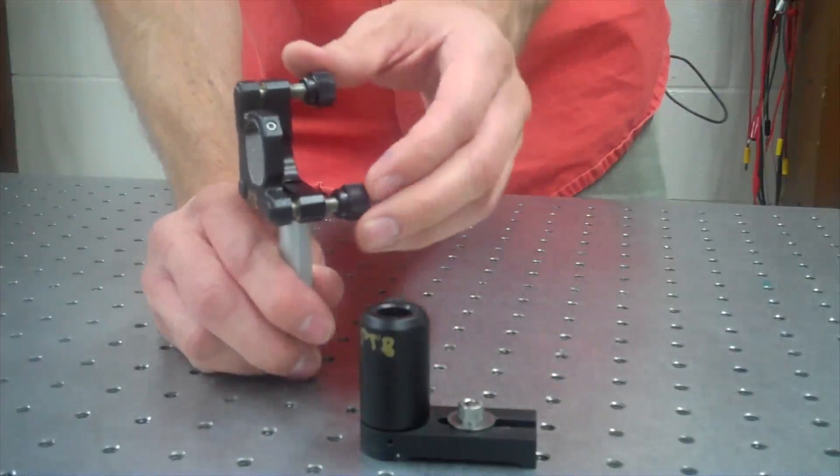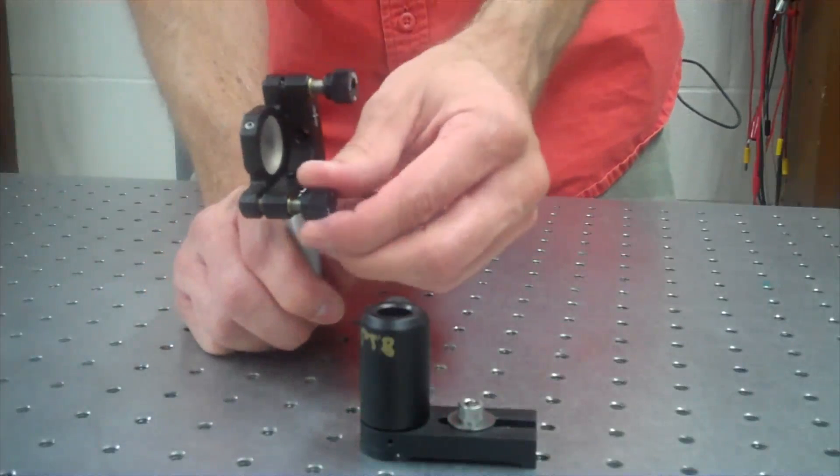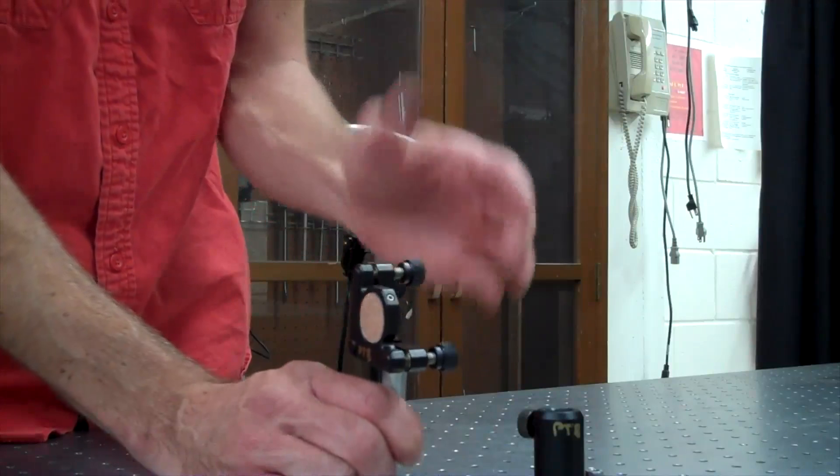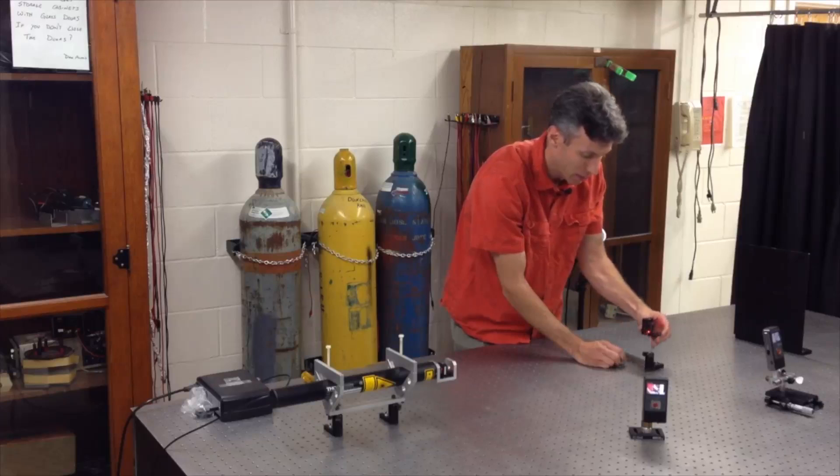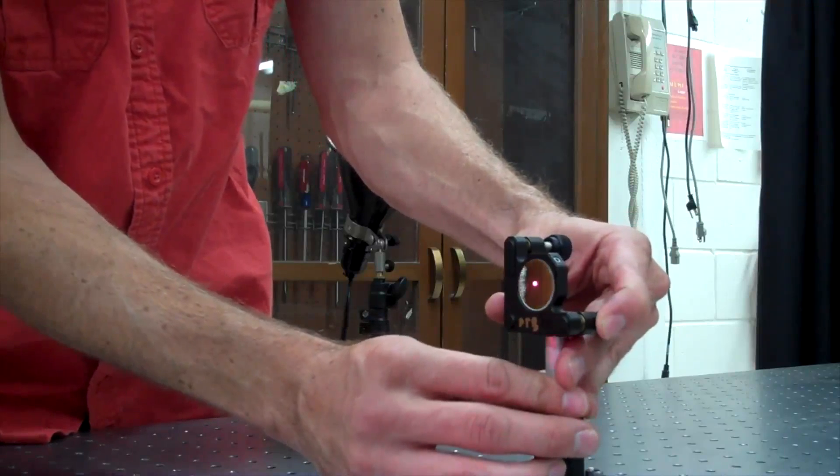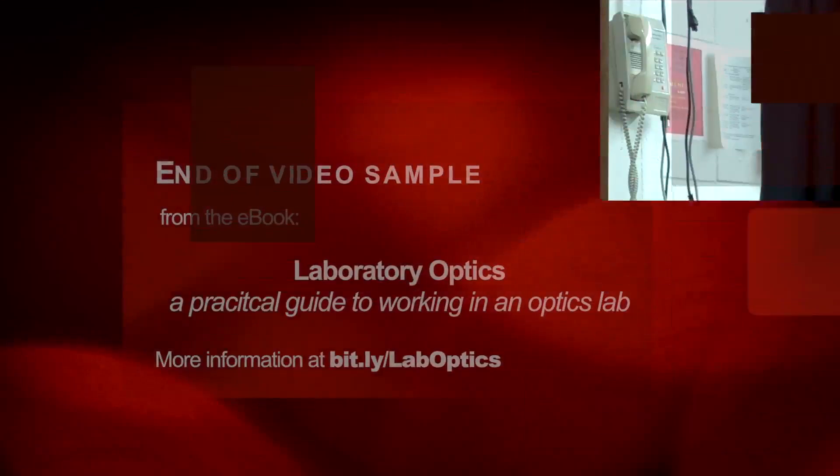The first step is going to be to take our steering mirror and adjust the actuators on its mount in the middle of their range so that we can tip and tilt the mirror in either direction. We'll then place it at its desired location with the spot centered on the mirror.